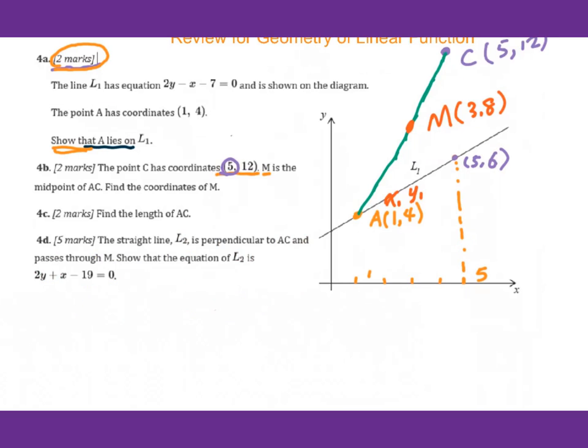Now let's go to 4d. The straight line L2 is perpendicular to AC and passes through M. Show that the equation of L2 is this. So we draw a perpendicular line to AC and label as L2. You will figure out the slope given that L2 is perpendicular to AC. Since this line passes through this point, we use y - y1 = m(x - x1) to find the equation, then change to this form.